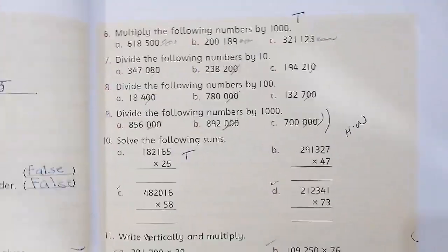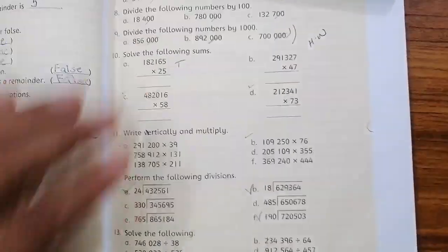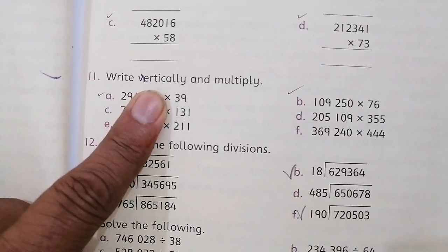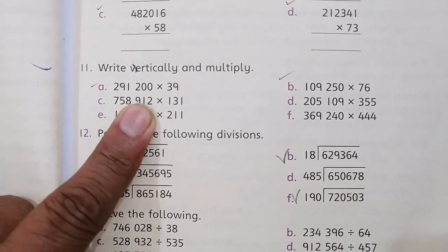So today we will start question number 11. Question number 11 is about multiplication. But we have to write them vertically first and then we will multiply.